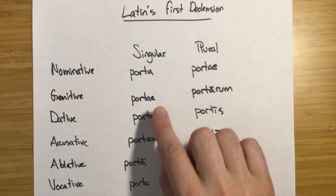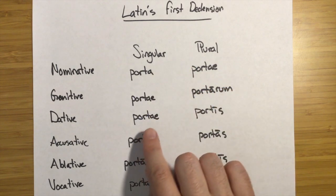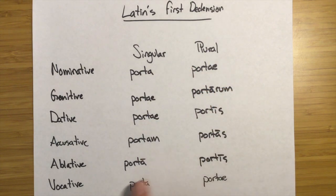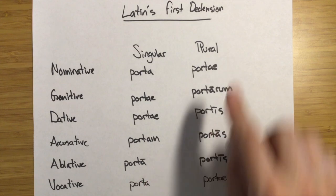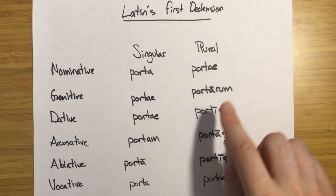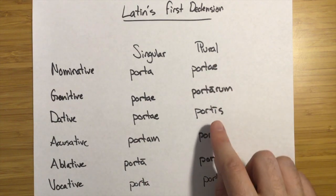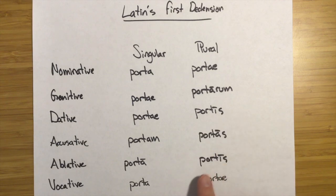So we have porta, portae, portae, portam, porta, porta, portae, portarum, portis, portas, portis, portae. Those are the Latin forms of porta.